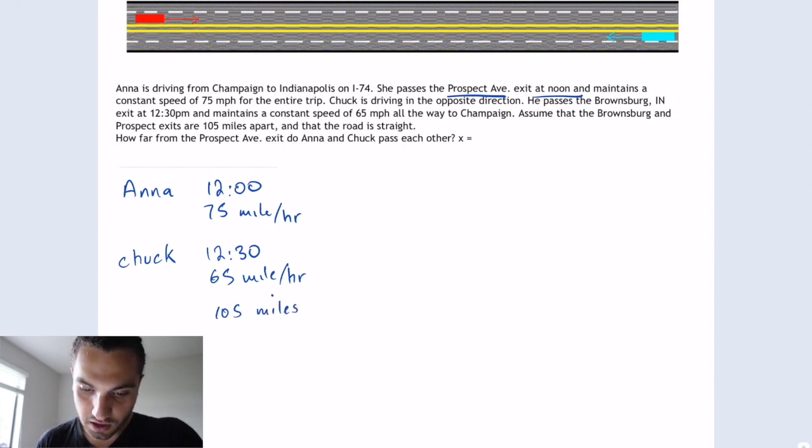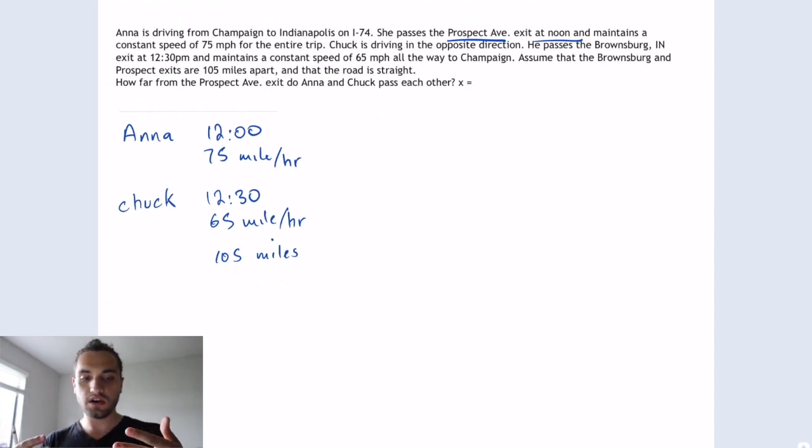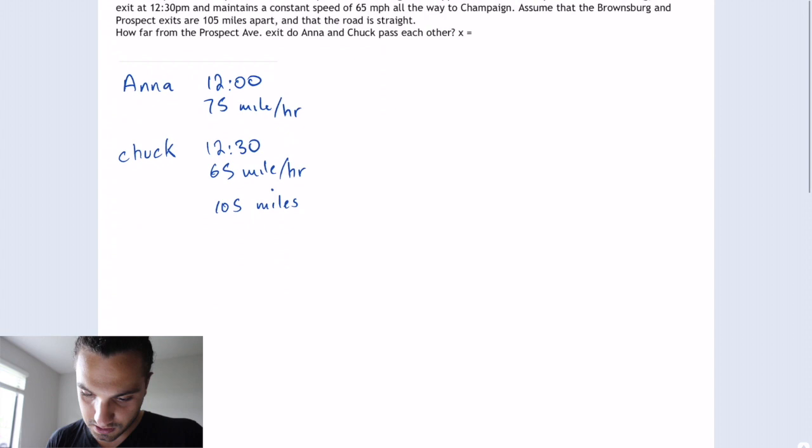So they want how far from the Prospect Avenue exit do Anna and Chuck pass each other at. So they want the distance or the point where both of them connect or pass through each other. So let's imagine those guys.